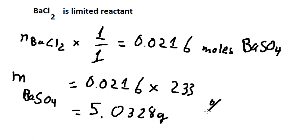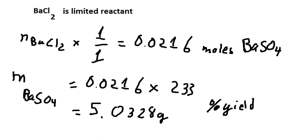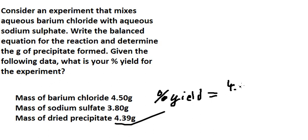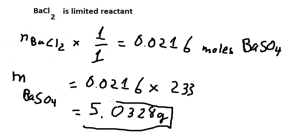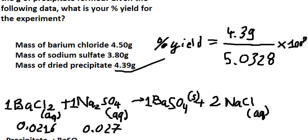The last part is about percentage yield. To calculate this, we use the actual product, which is 4.39 grams, divided by the theoretical product, which is 5.0328 grams, then multiply by 100%. After we calculate this, we get the final answer, which is about 87%. This is the end — thank you for watching.